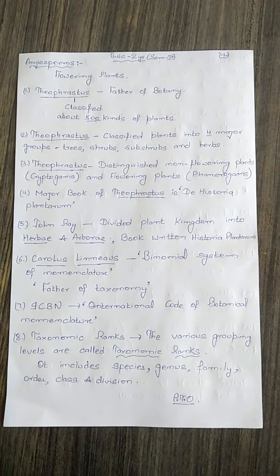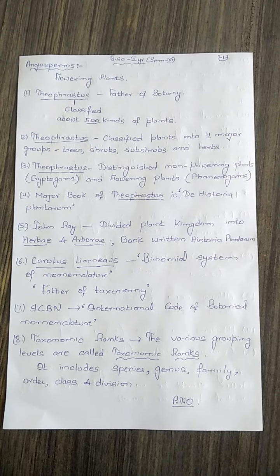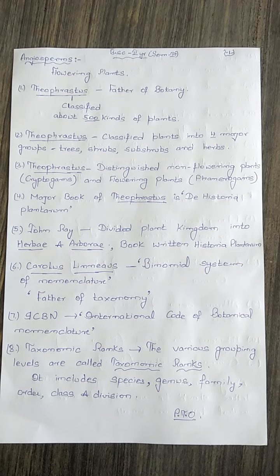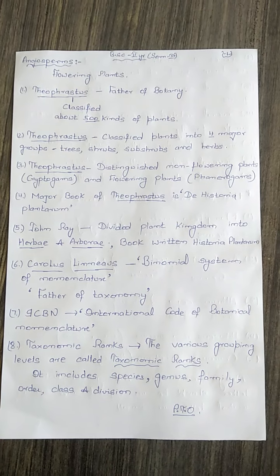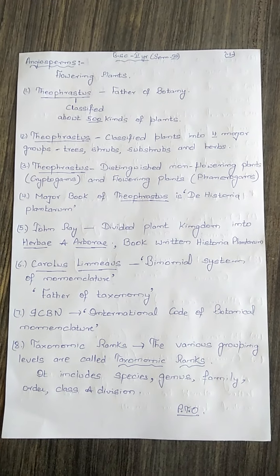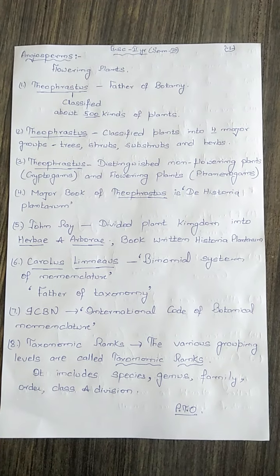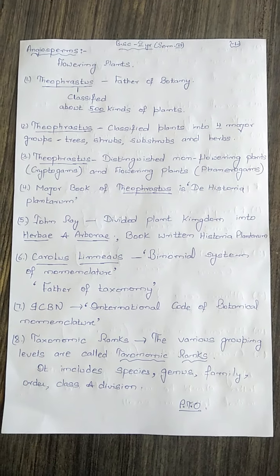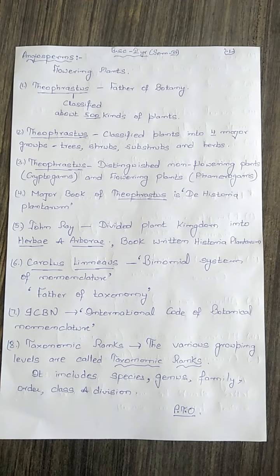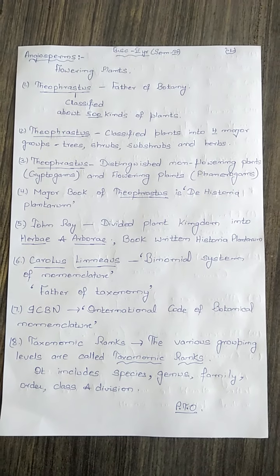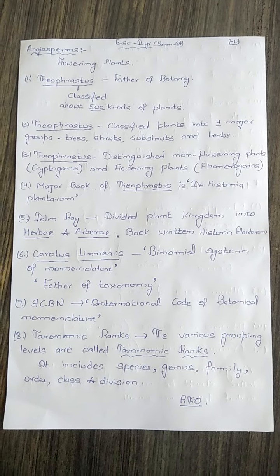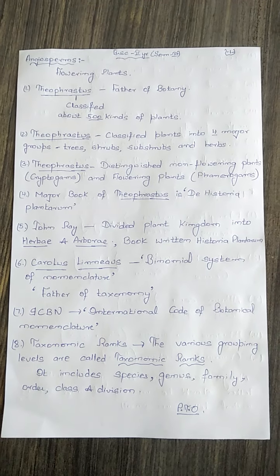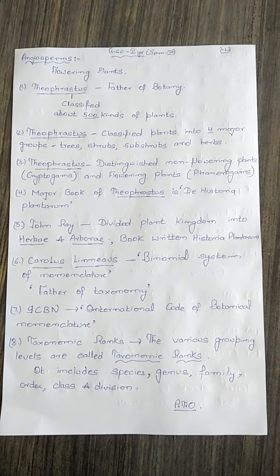Now, some scientists and their contributions. Theophrastus — spelled T-H-E-O-P-H-R-A-S-T-U-S — is also called the father of botany, and he classified about 500 kinds of plants.